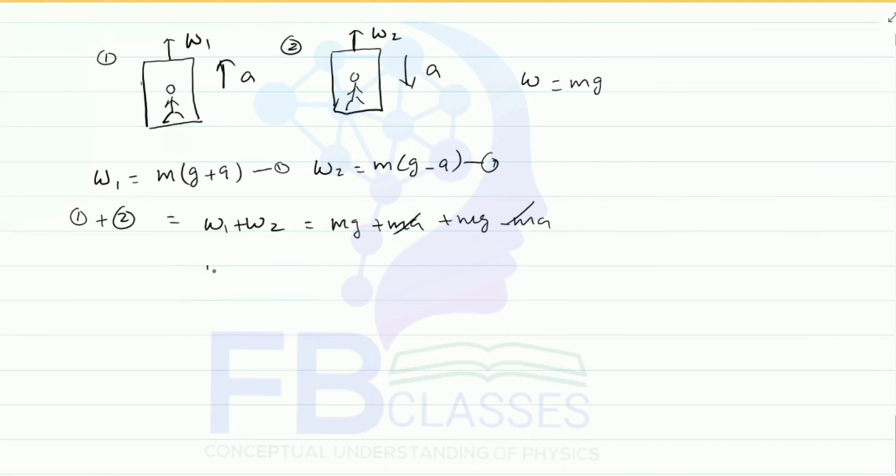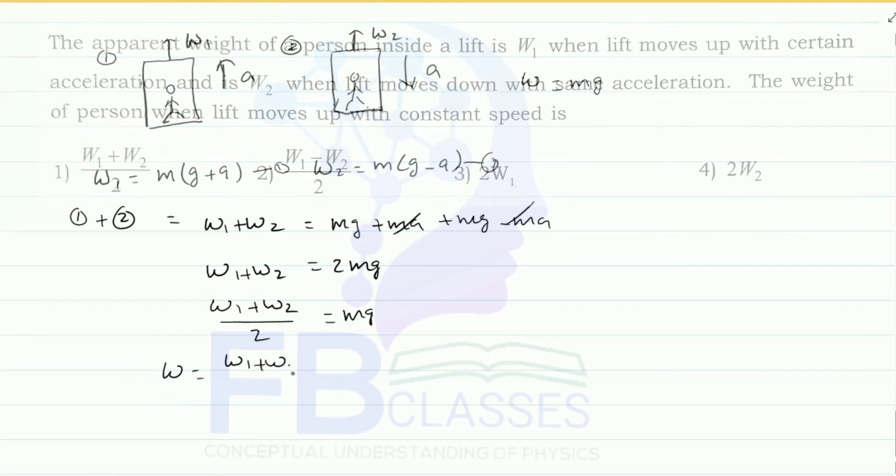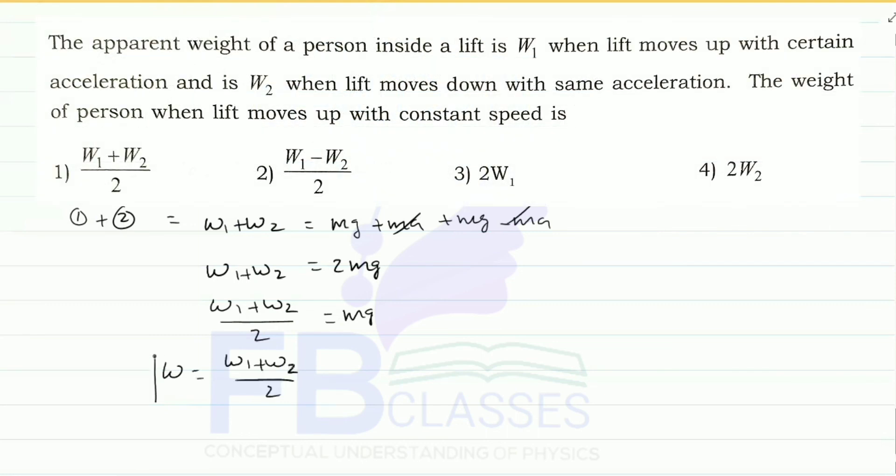Therefore (W1 + W2)/2 equals mg. Moving 2 to the other side gives mg equals (W1 + W2)/2. Since mg equals W, the actual weight W equals (W1 + W2)/2. That is the answer. Do you understand?